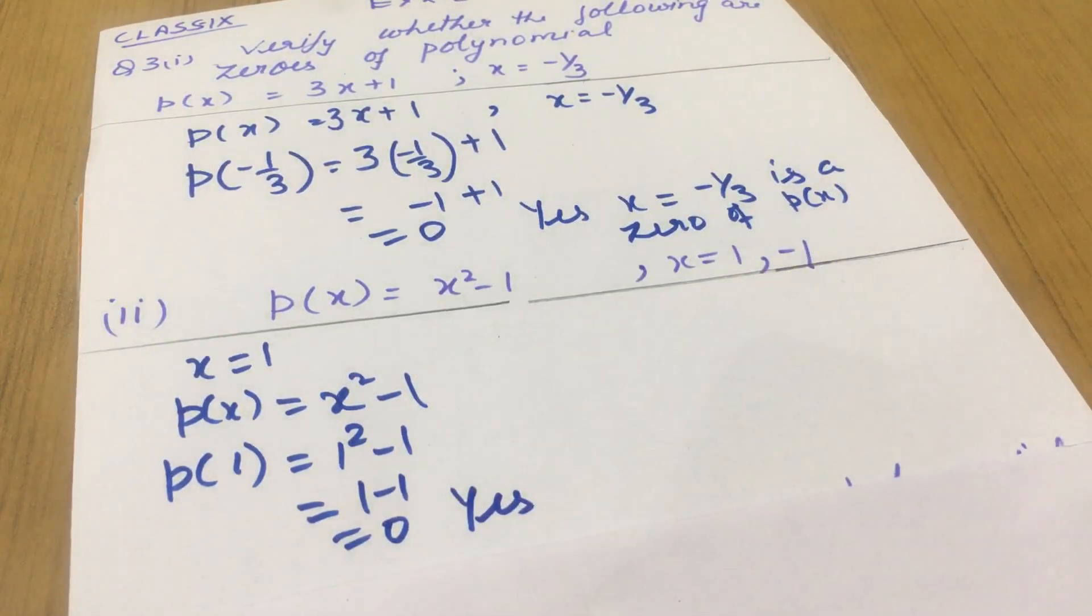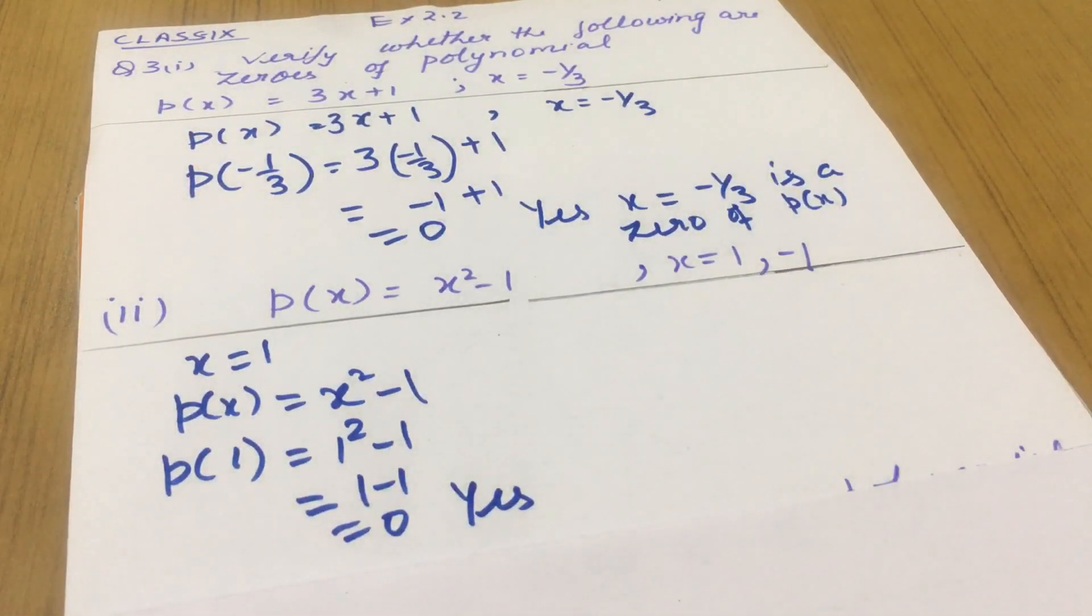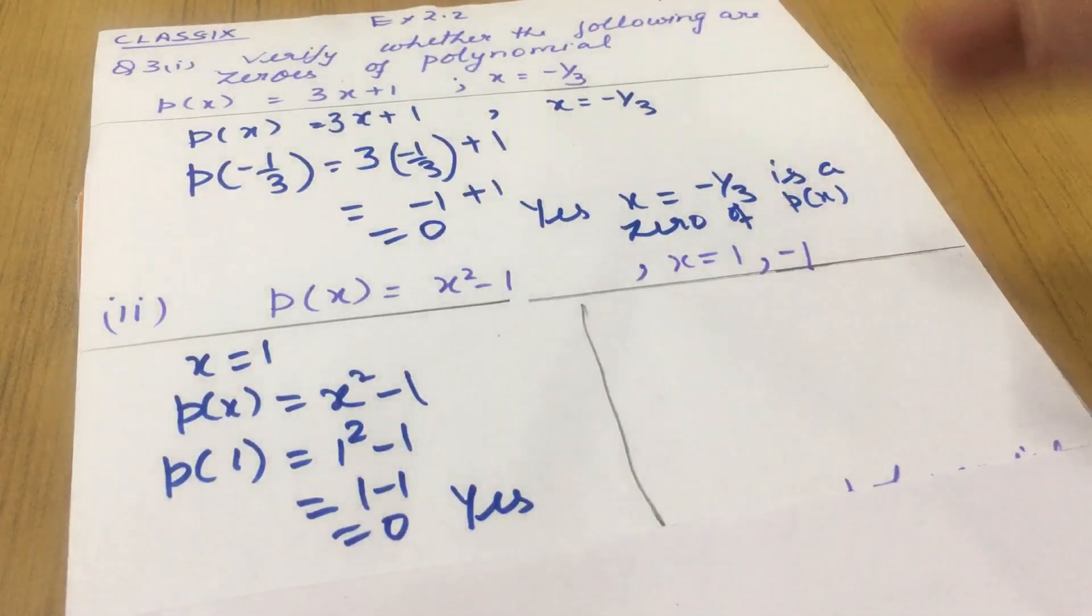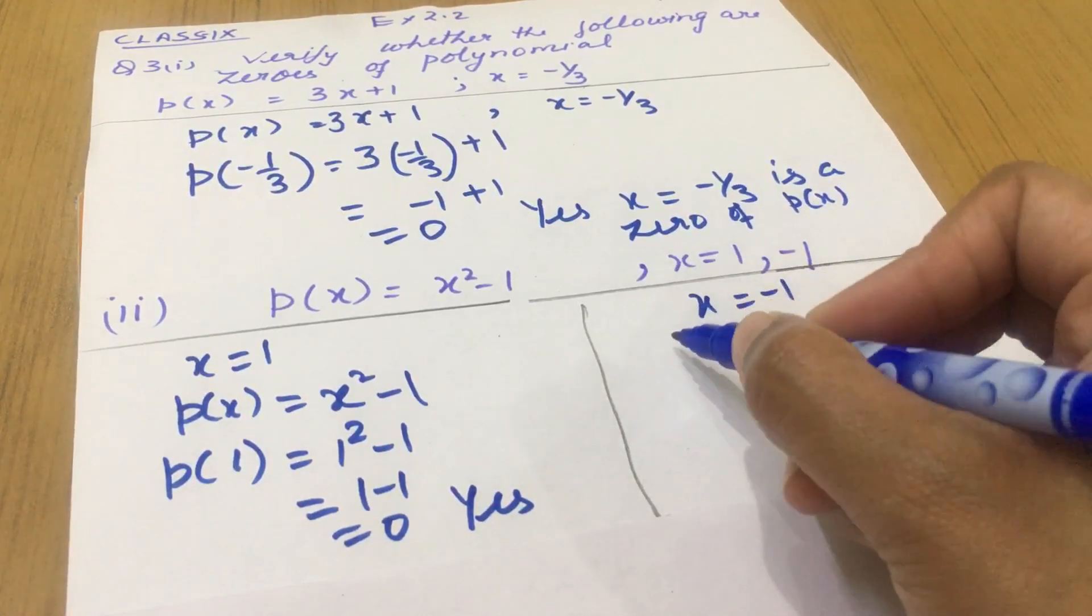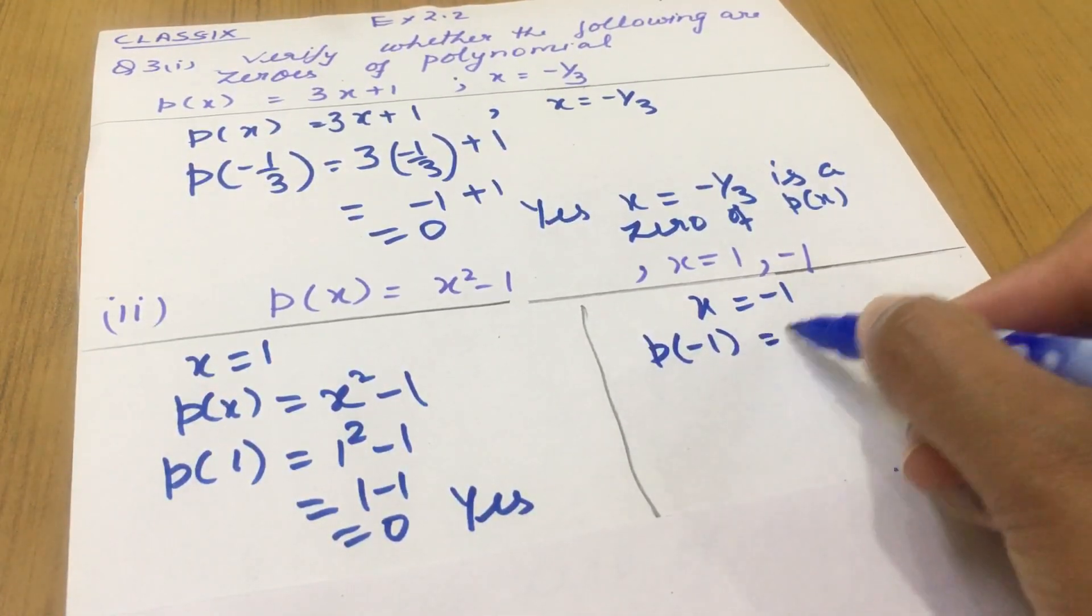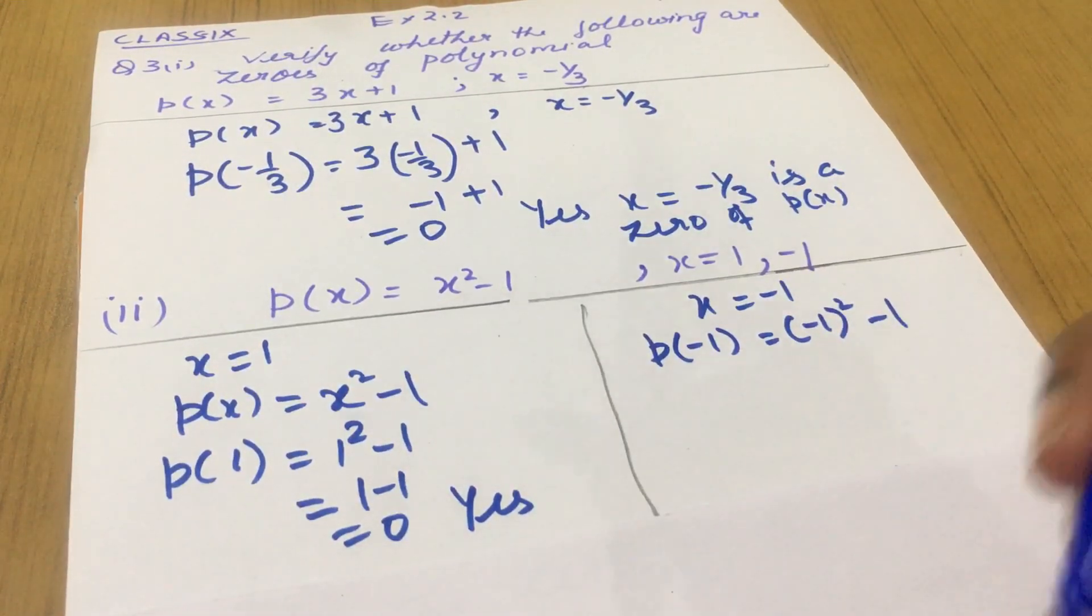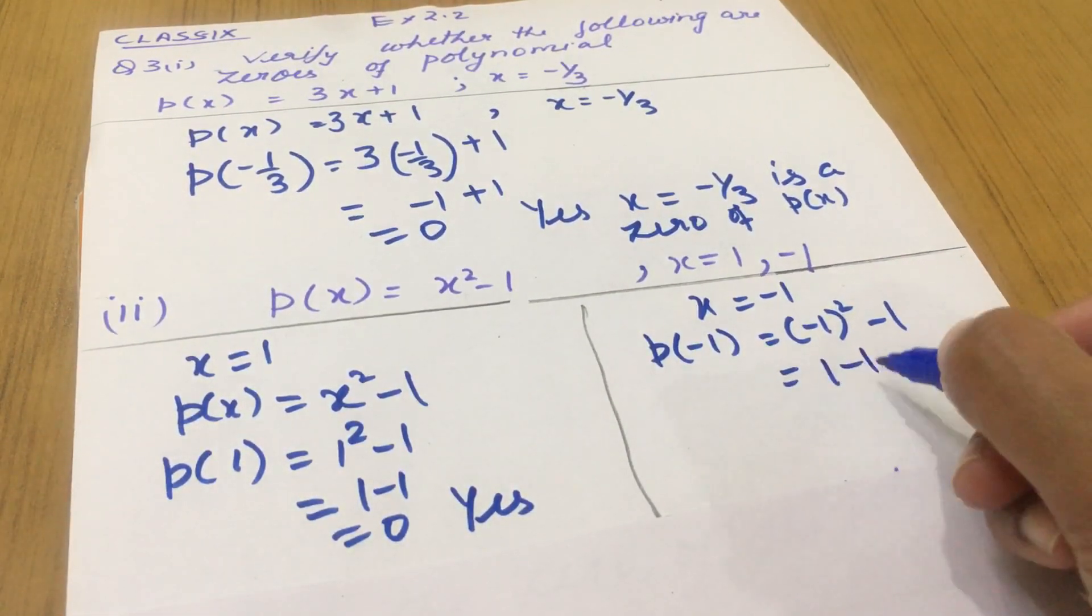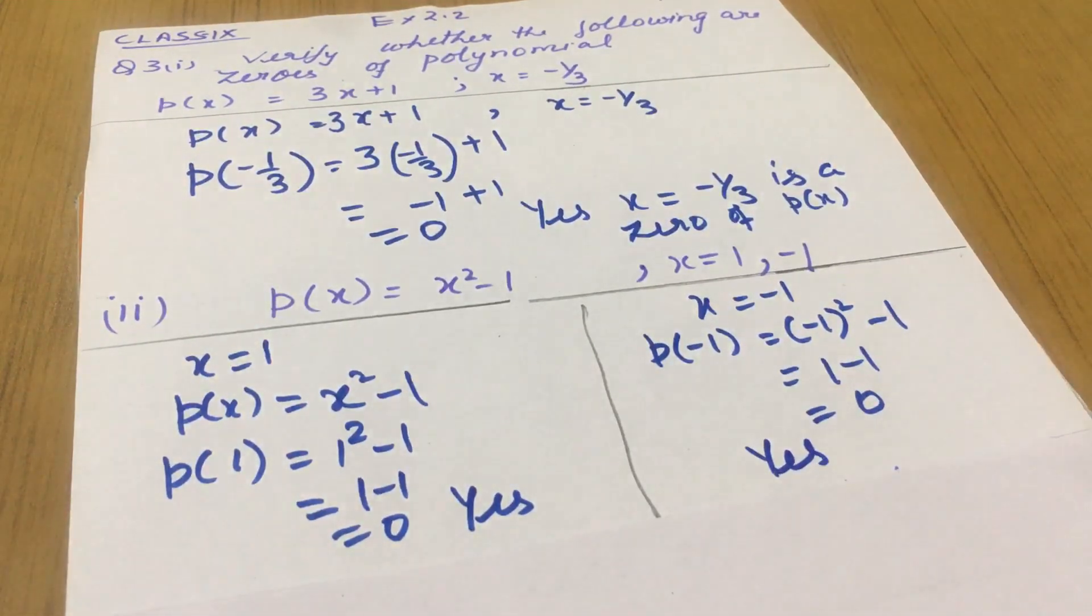If I am substituting for x as minus 1, then again p of minus 1 equals to minus 1 squared minus 1. We will substitute here and minus 1 square is 1 minus 1 is 0. Again, yes, it is a zero of the polynomial.